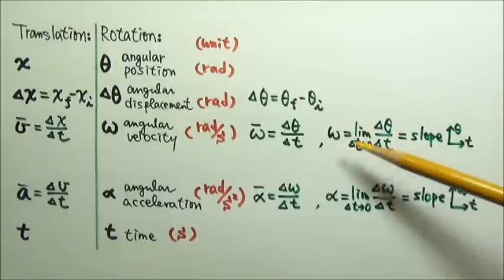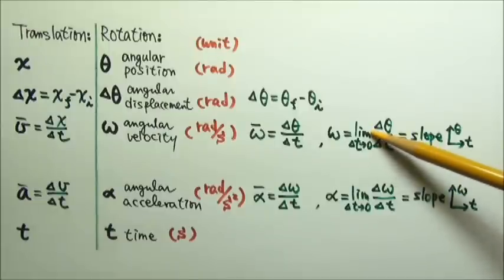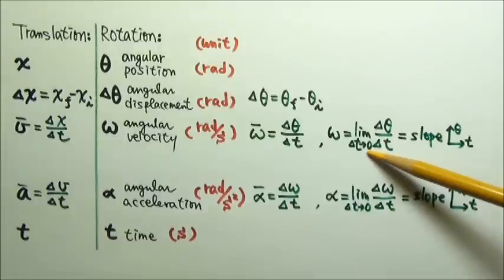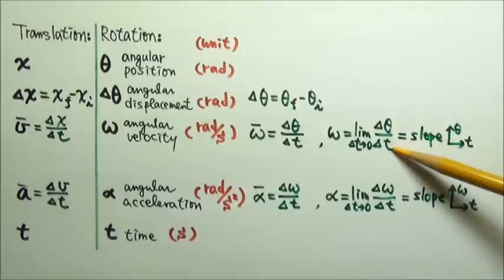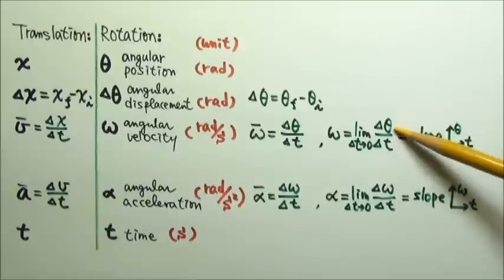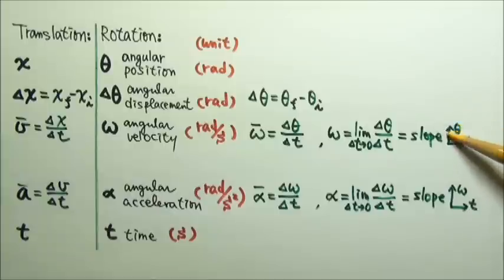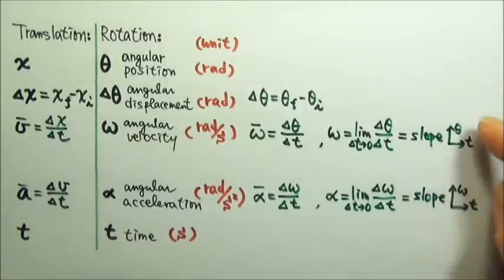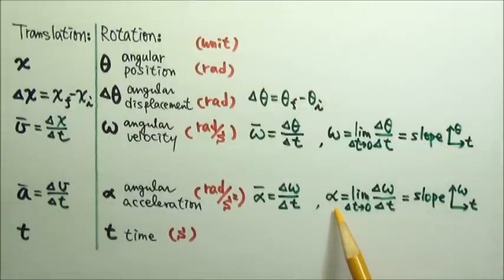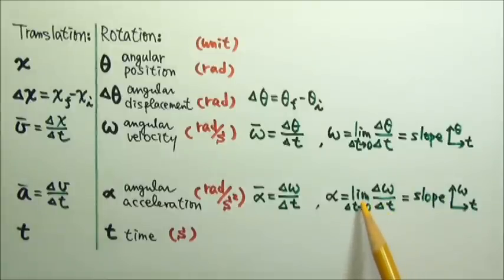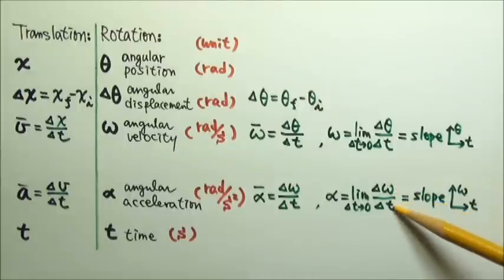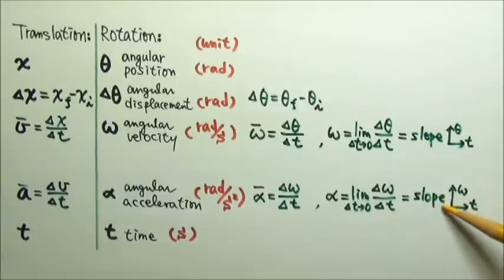Instantaneous angular velocity is also an average angular velocity — it's just the average taken in the limit when the time interval approaches zero. Since we are dividing, this is the rise over run, so it is the slope of an angular position versus time graph, because delta theta is the rise and delta t is the run. Similarly, instantaneous angular acceleration is the slope of an angular velocity versus time graph, because delta omega is the rise and delta t is the run.